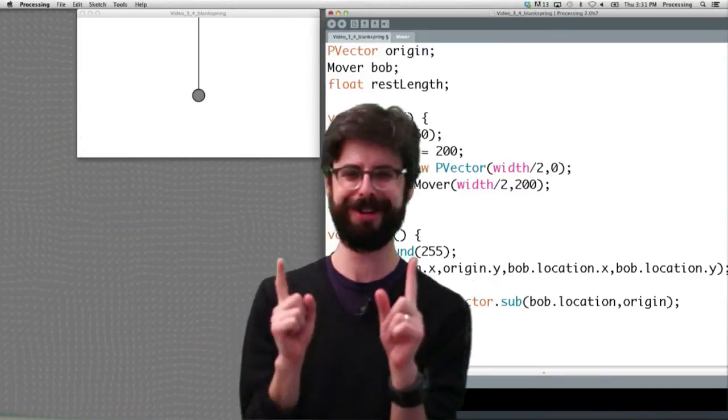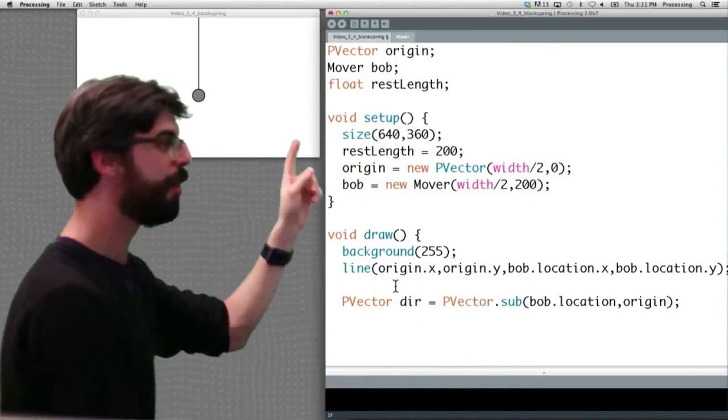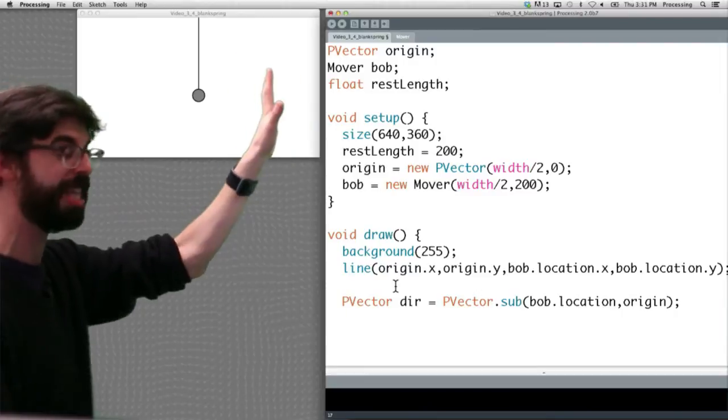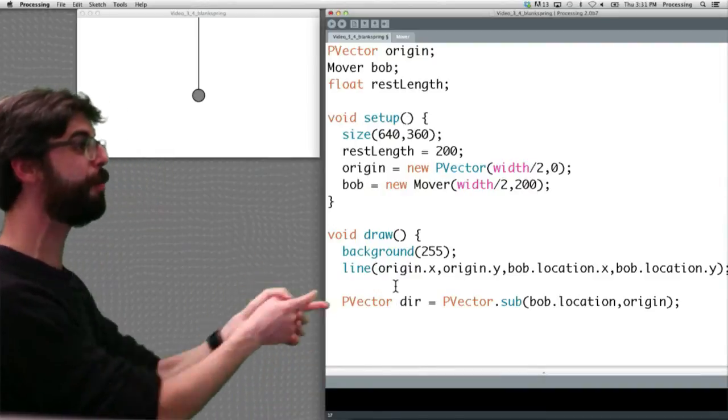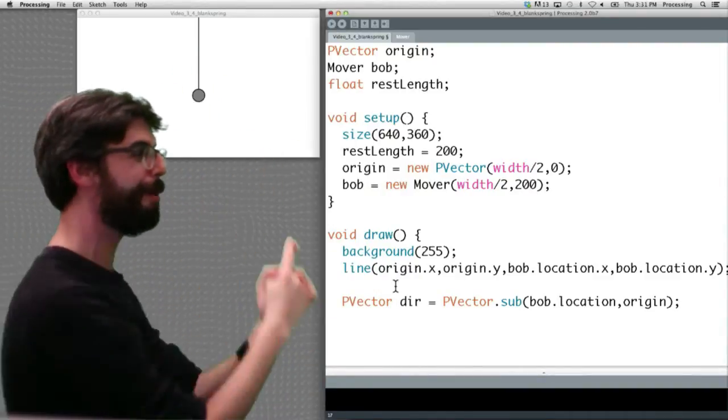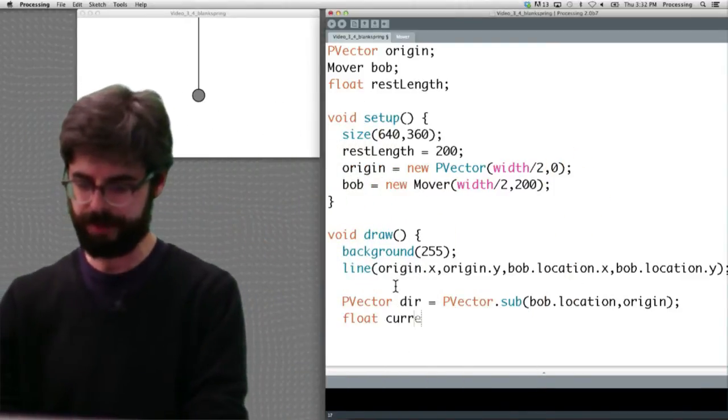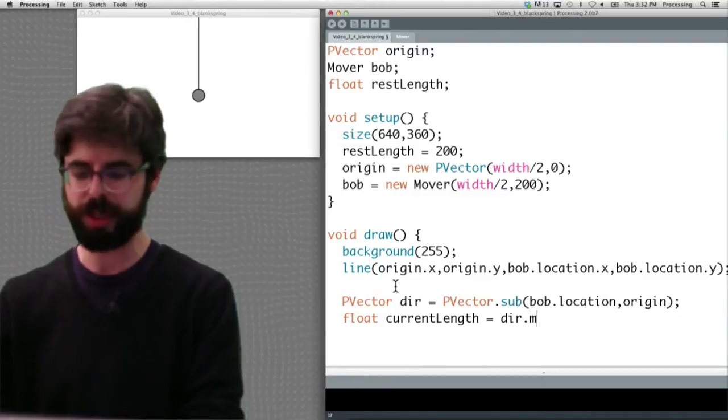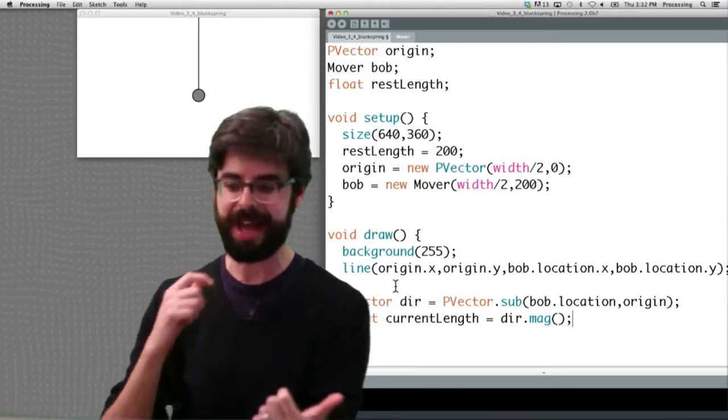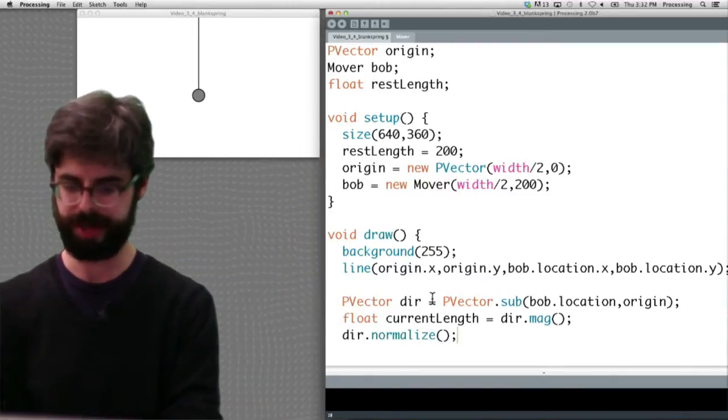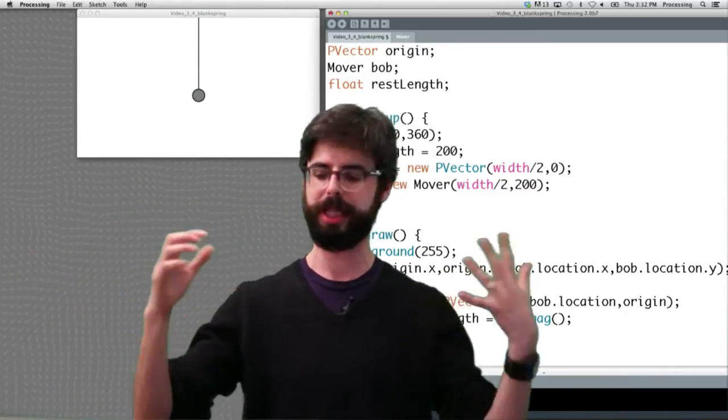Now we've got that direction vector, the bob's location minus the origin. We need to know the current length of the spring because we're going to compare that to the rest length. By the way, the rest length is just a nice little variable that's set up to be 200. We need to know the current length. Well, it just so happens we just made a vector that points from the origin to the bob. The current length of that spring is the length of that vector. So I'm going to make a variable called current length and just say, let me ask for the magnitude of that vector so I have the current length. Once we've done that, I can normalize that vector.